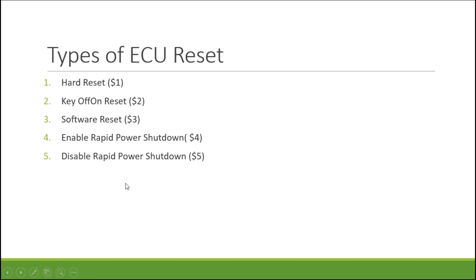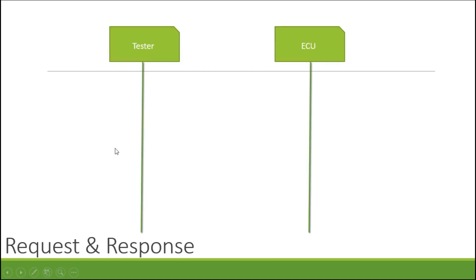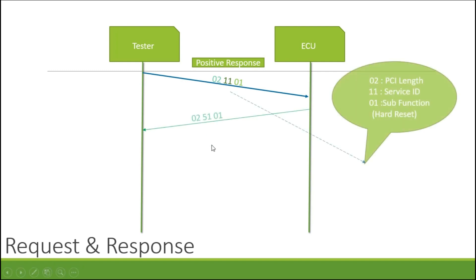The first one is hard reset. When you do a hard reset, it will reinitialize both volatile and non-volatile memory locations. This implies the volatile and non-volatile memory as well as the electronic subcomponents directly connected to the ECU are initialized based upon the request. Here you can see the request and response — request will be 0x02, 0x11, 0x01 and the positive response will be 0x02, 0x51, 0x01.